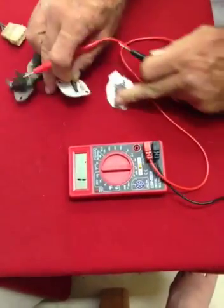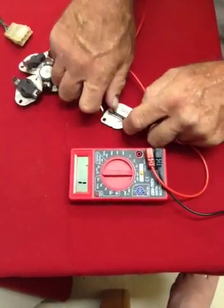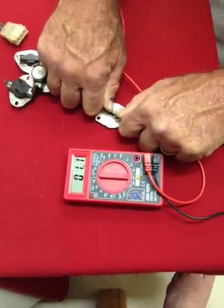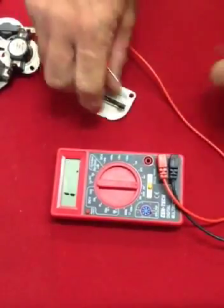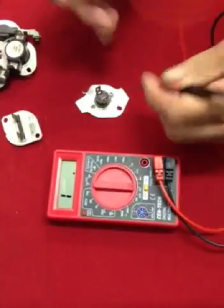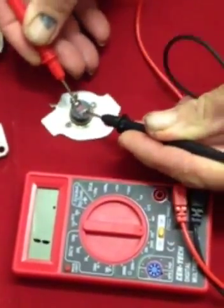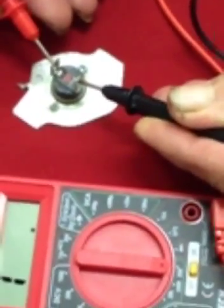Same thing with a thermal fuse. You want to make sure you're getting continuity across the terminals. One that's bad won't give you a reading when you go across it like this thermal cutoff. See, the meter did not change reading across it.